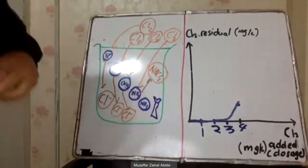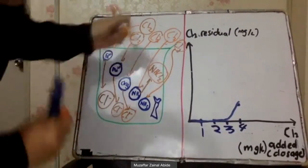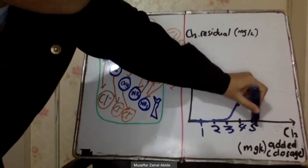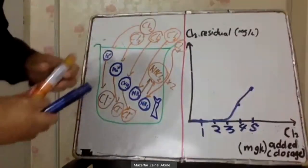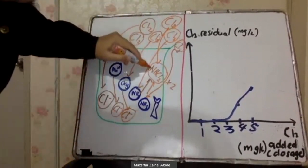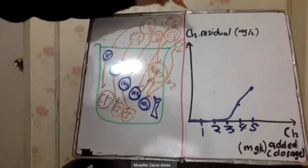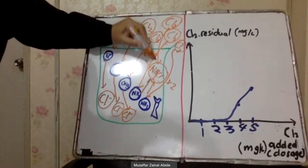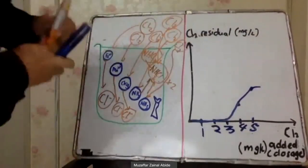If we add another chlorine, it reacts with more ammonia, producing more monochloramine (NH₂Cl). You can see the chlorine residual increasing. Then, if we add yet another chlorine, it reacts with monochloramine again — still producing NH₂Cl — so there is no additional increase and the residual becomes static.